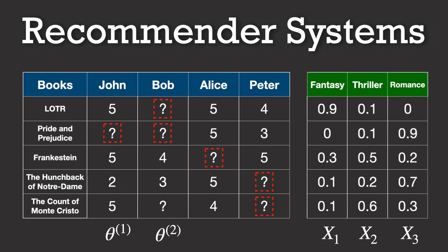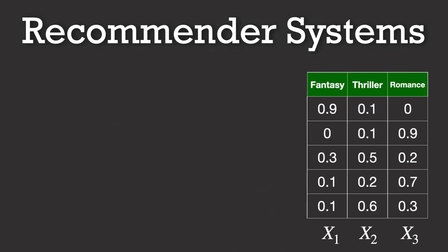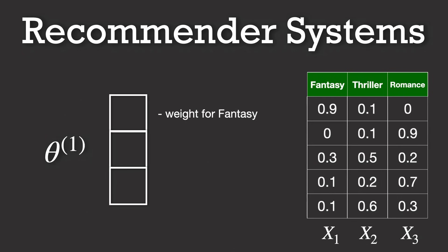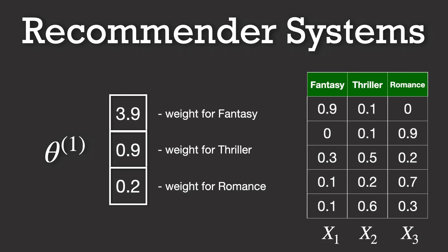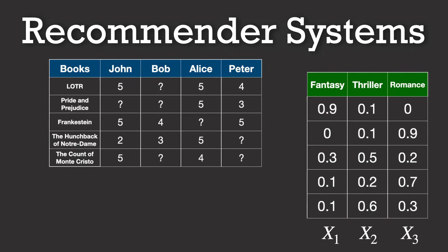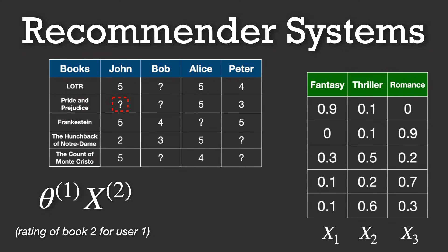For each user, we assume that they have certain preferences for these features. We represent each user with a set of parameters — a kind of personal weighting of how much they care about fantasy, thriller, or romance genres — which we'll call theta. For instance, if a user loves fantasy books like The Lord of the Rings, their parameter for the fantasy feature would be high, while if they are not particularly fond of romantic plots, their weight for the romance feature might be lower. When it comes to predicting how a user might rate a book, we compute the dot product of the user's parameter vector with the book's feature vector — we multiply each of the book's feature values by their corresponding weight in the user's profile and sum them up. That sum gives us the predicted rating for that book by that user.